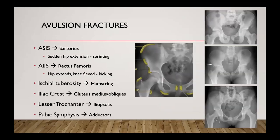On avulsion fractures: the two most common are the sartorius off the ASIS, seen frequently with sudden hip extension such as taking off on a sprint or a batter leaving the batter's box, and the AIIS — rectus femoris — particularly with hip extension and knee flexion such as kicking in soccer or punting in football. The ischial tuberosity can have hamstring avulsions with a bony piece in younger patients. Lesser trochanter psoas avulsions and pubic symphysis adductor avulsions also occur.